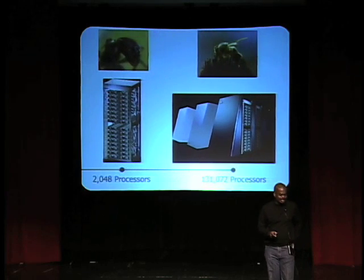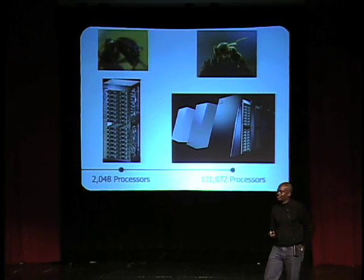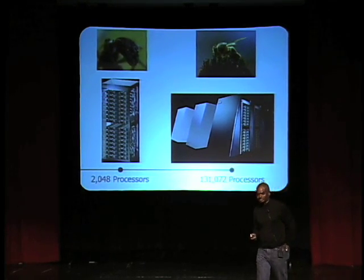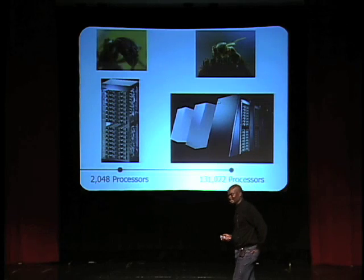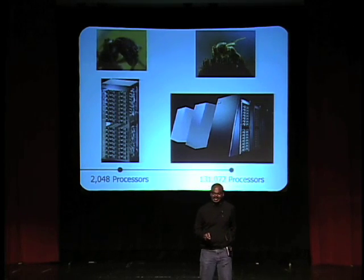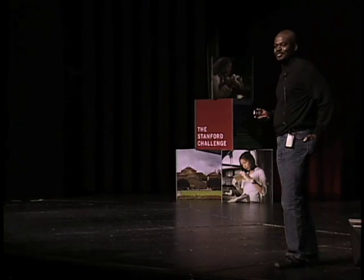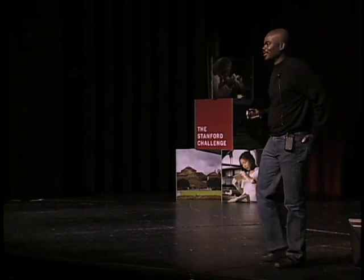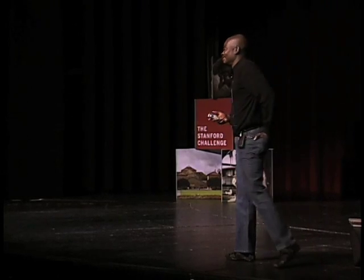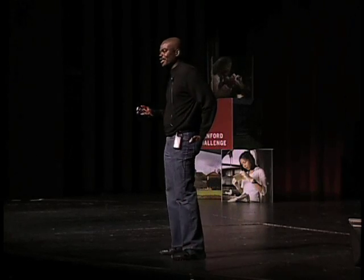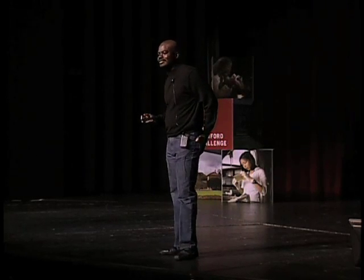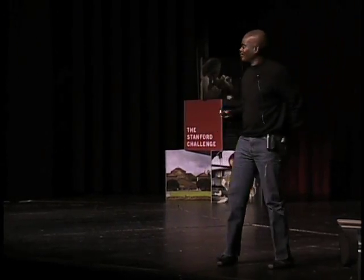And with a 64-rack supercomputer, you can simulate a honeybee's million-neuron brain. That's depressing. A $100 million supercomputer with a $100,000-a-month electric bill only gets us up to a honeybee.